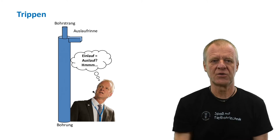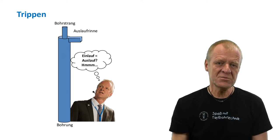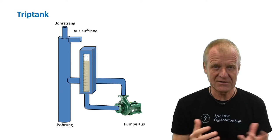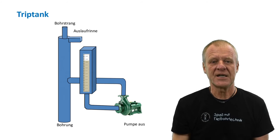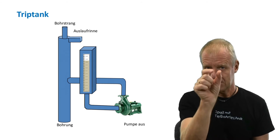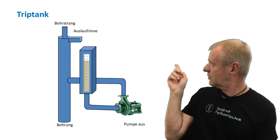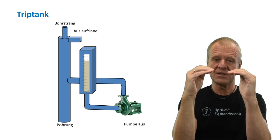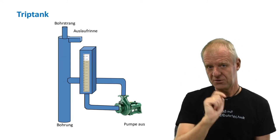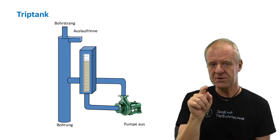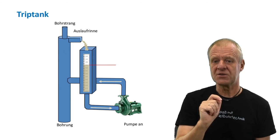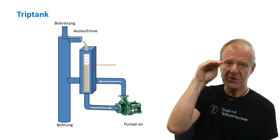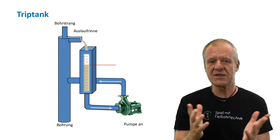For this purpose, we have on every drilling rig a so-called trip tank. It is a tank with a relatively small surface area which is connected to the borehole. The trip tank has a scale with which you can see how high the mud in the tank is, and the mud level is the same in the borehole and in the trip tank. There is a pump connected to the trip tank which circulates the mud from the trip tank back into the borehole so that the borehole is always full and overflowing back into the trip tank.